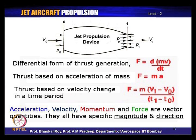We are talking about quantities which are acceleration, velocity, momentum, and force — all vector quantities with specific magnitude and direction. The thrust generated will invariably have a certain magnitude and a direction. The direction is important because the aircraft will move in the direction in which thrust is generated.